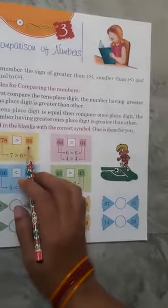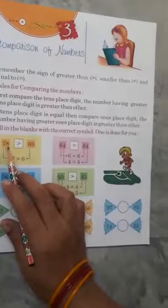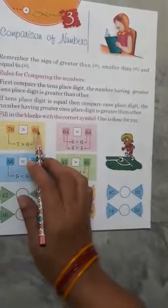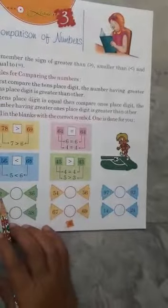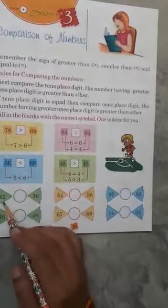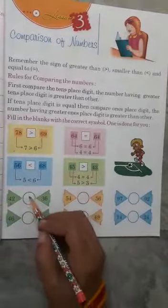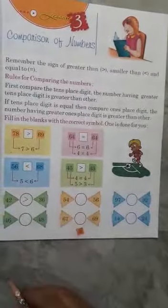First you will look at the first number. You can decide from the first number. If these two are equal, then you will look at the second number, okay? In this way. 42, 36 - look at the first number. 4 is greater than 3, so the sign will be greater than.